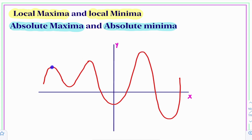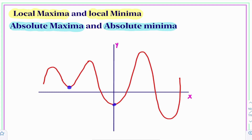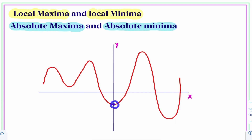I hope you are understanding. At these points, the function attains local maximum, and at this point, the function attains absolute maximum. In the same way, you observe this function attains minimum value at this point, at this point, as well as at this point. This is the least value — this is known as absolute minimum. At these other points, the function attains local minimum.